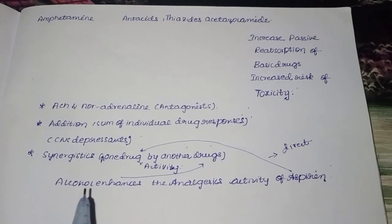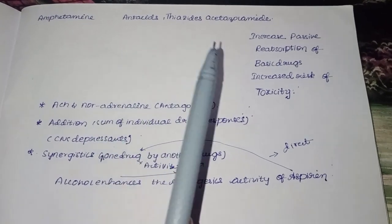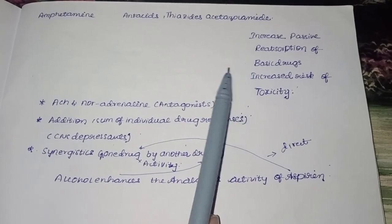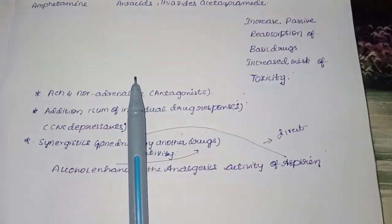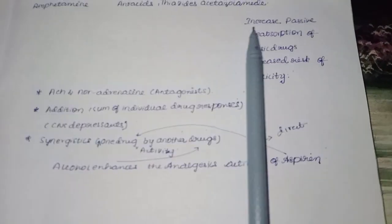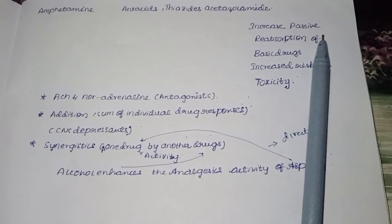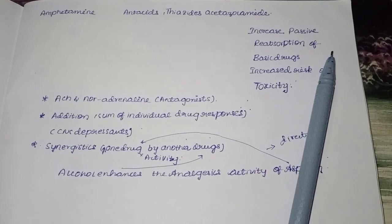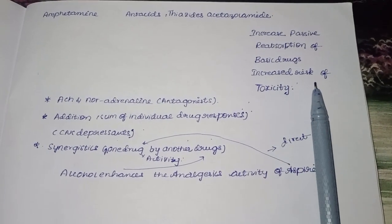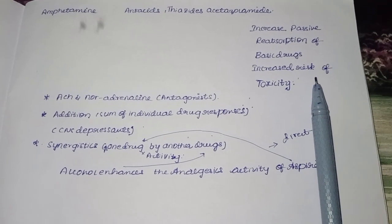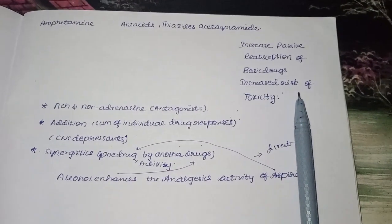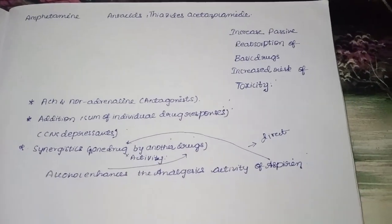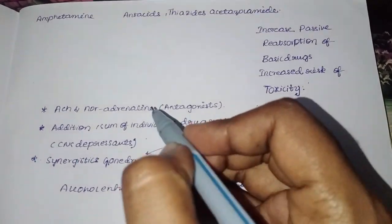Another excretion interaction involves amphetamine with antacids and thiazides. Antacids and thiazides increase passive reabsorption of basic drugs like amphetamine, thereby increasing the risk of toxicity. Basic drugs are reabsorbed more in alkaline urine, increasing their levels in the body.